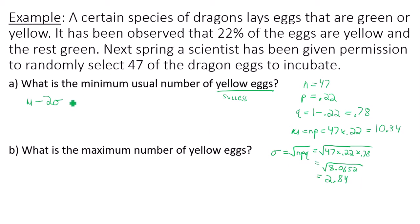So mu minus 2 sigma. Minimum usual number of yellow eggs. I have 10.34 minus 2 times 2.84. Plug that into your calculator and you get 4.66. And you will always round up your minimum usual value. Always round up. Because if I was to get 4, that would be much lower than the minimum usual value here. So 5.